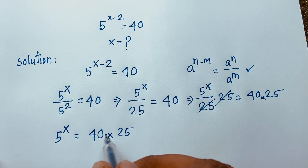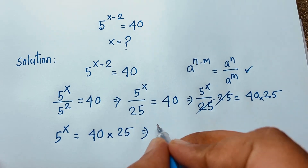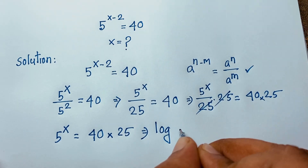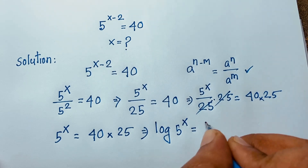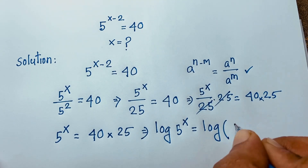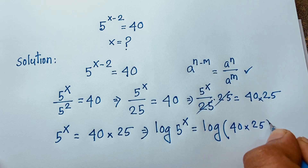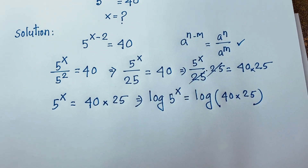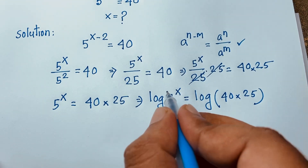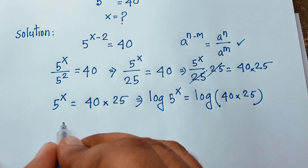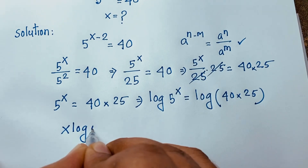Now to find the value of x in this exponential equation, I apply log to both sides. So log of 5 to the power x is equal to log of 40 times 25. Using the logarithm power rule, the exponent moves in front, giving us x times log 5 on the left side.